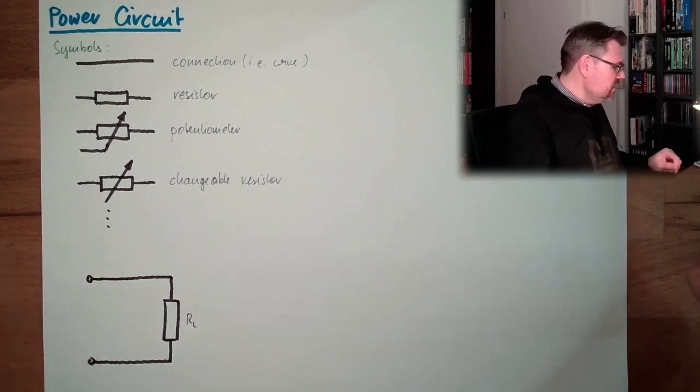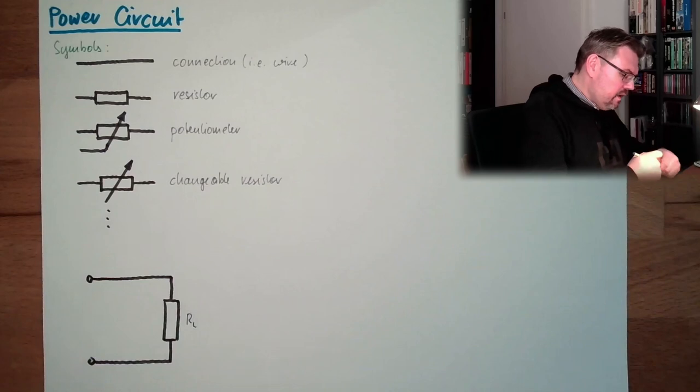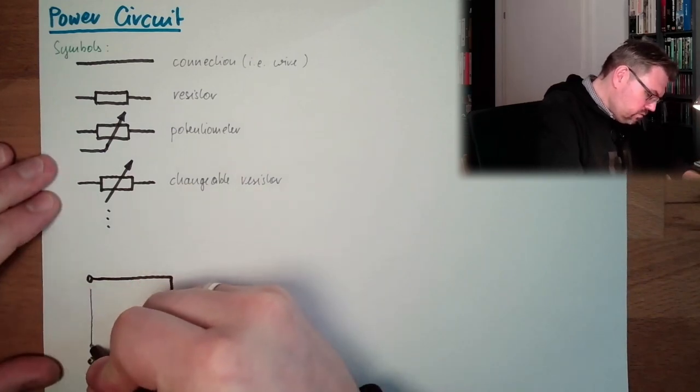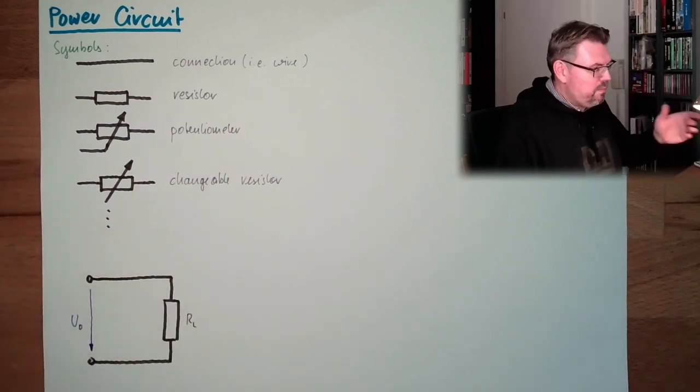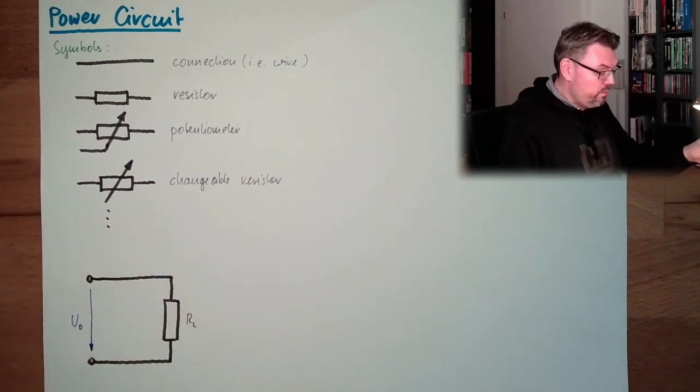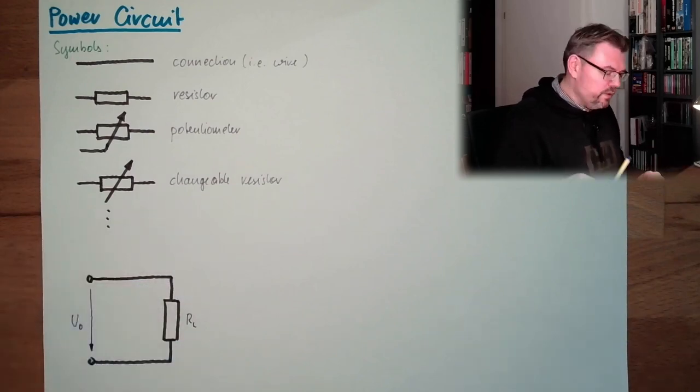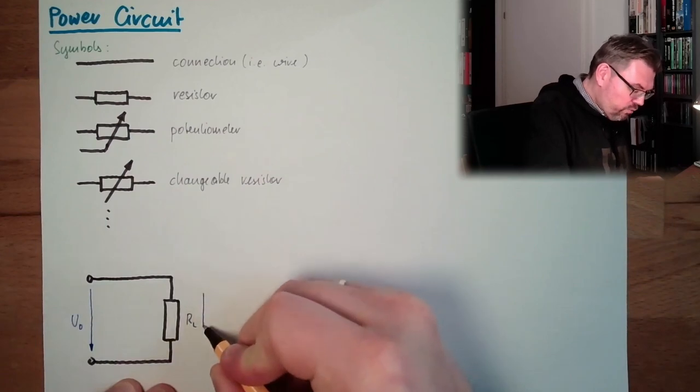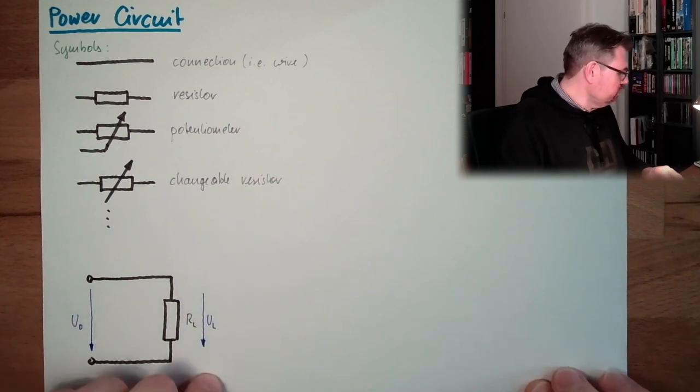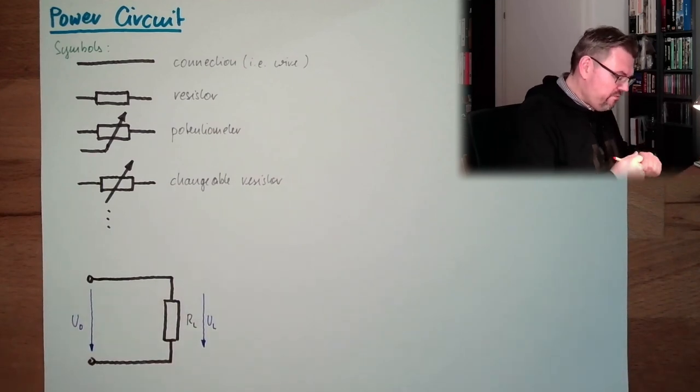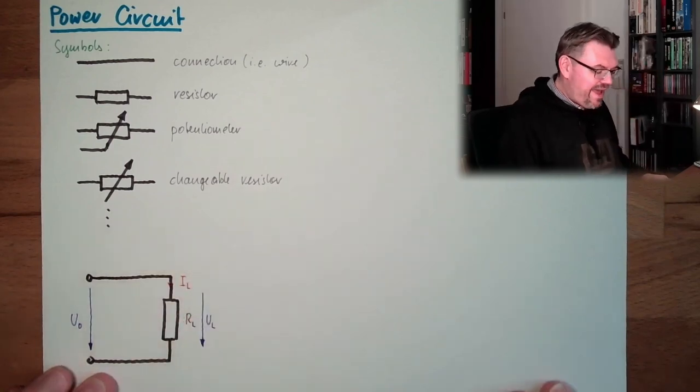And now I can also add the other physical quantities. So I name the resistor. I call it RL, load. This resistor is the load we want to drive. Here we plug in some power. So we plug in here a certain voltage, source voltage. Call it U0 maybe. At the load we have here a voltage UL at the load, and here we have a current IL, a current at the load.